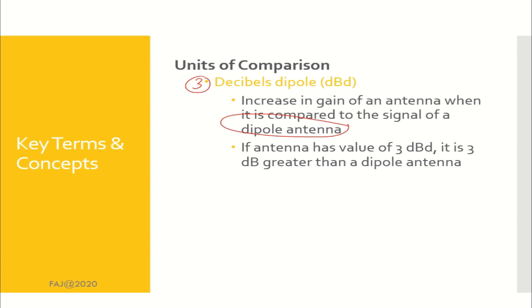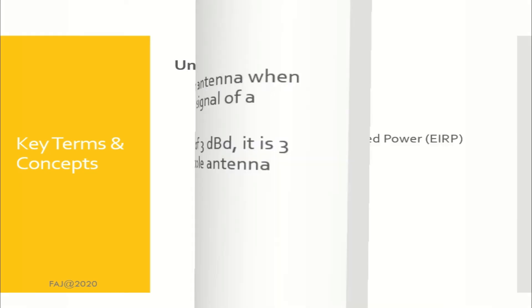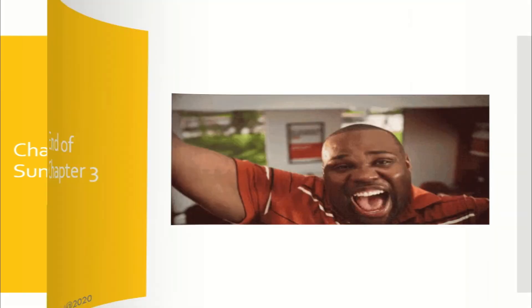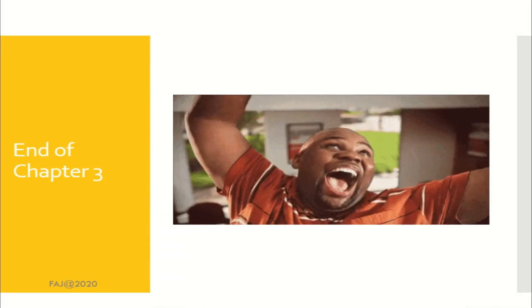For example, if an antenna has a value of 3 dBd, it is 3 dBd greater than a dipole antenna. This is the Chapter 3 summary — looking back at what you have learned. End of chapter.